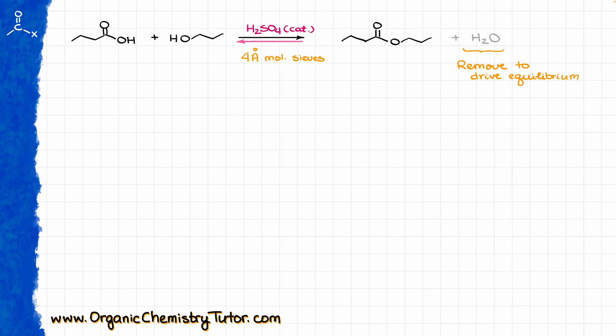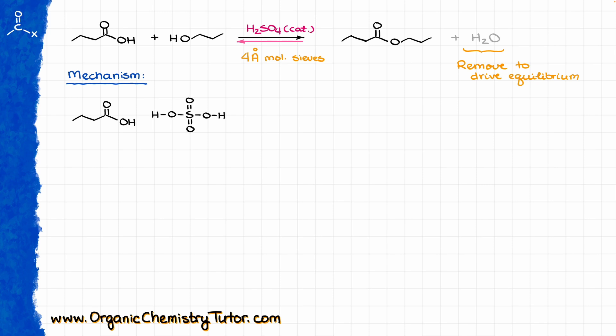That is not the most important part of this reaction. The important part is the mechanism of the reaction itself, which you are most likely going to be tested on in the exam. When it comes to the mechanism, the first thing I'm going to do is redraw my carboxylic acid, and the first step is going to be to protonate our carboxylic acid. This is where the sulfuric acid comes into play.